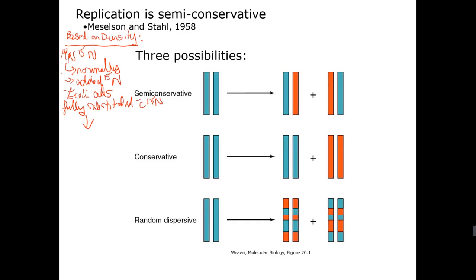And then you transfer this to media that contains regular N14 as the nitrogen source. So you do this for 14 generations and then you transfer it to media that contains N14.